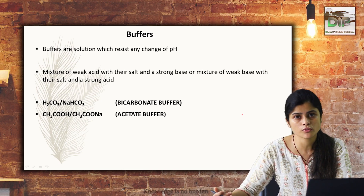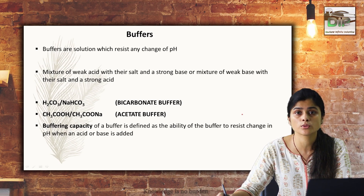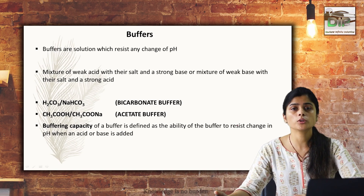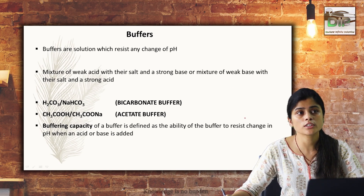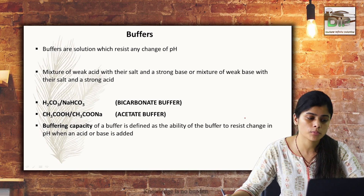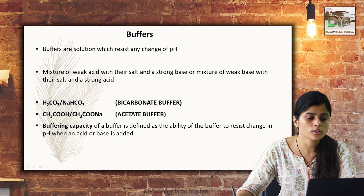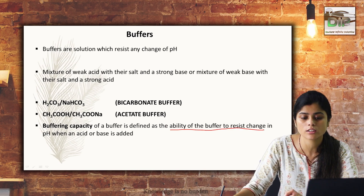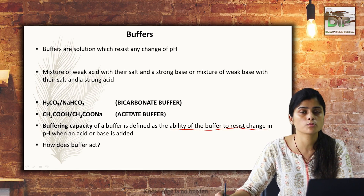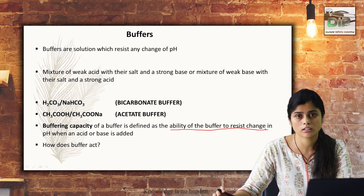Buffering capacity refers to the ability of a buffer to resist a change in pH by one unit when acid or base is added — that is, how well it can resist change in pH without its original pH being altered by the addition of acid or base. Now, each buffer will be discussed individually: how the bicarbonate buffer, phosphate buffer, and hemoglobin buffer act intracellularly, extracellularly, and via the erythrocytes in subsequent slides.